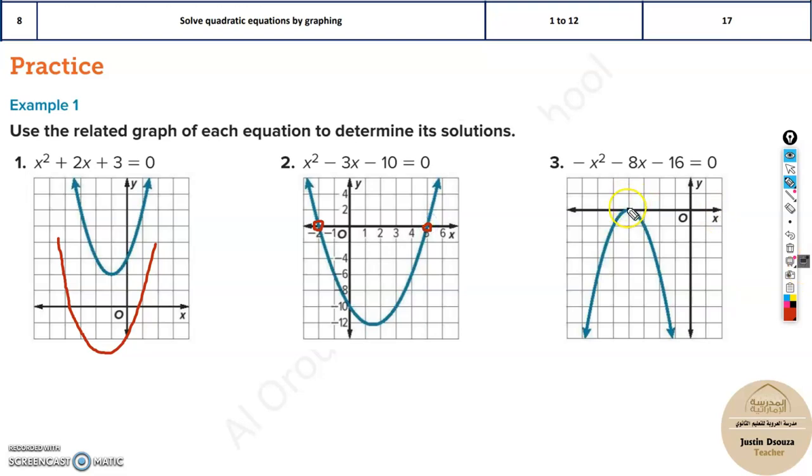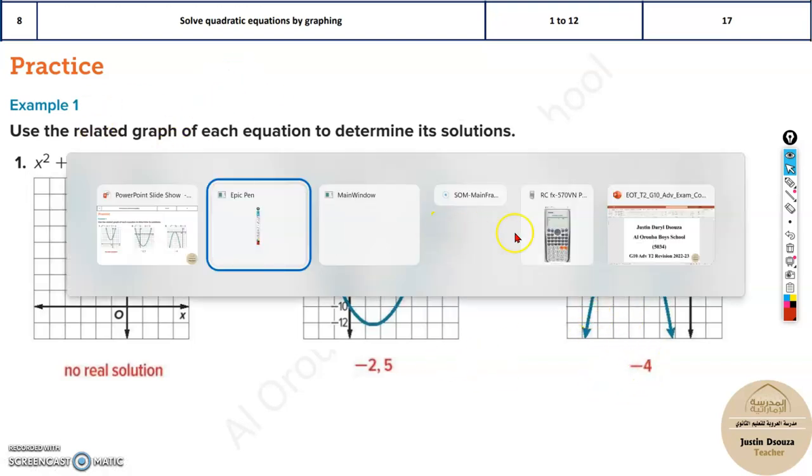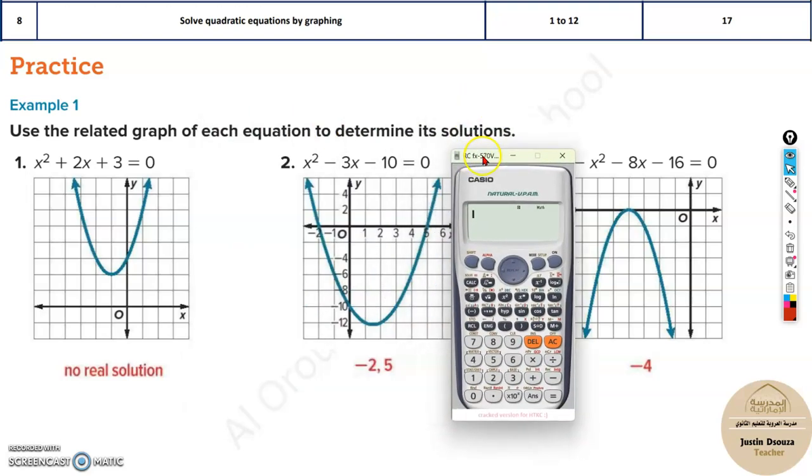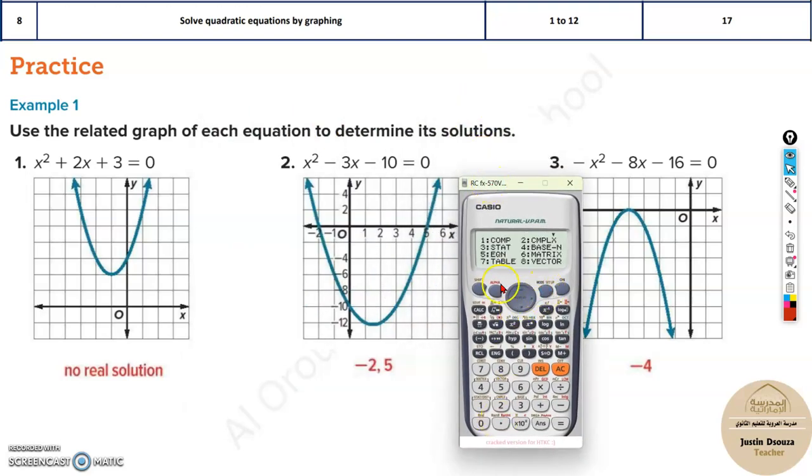See, over here it touches the x-axis—this is a solution, this is a solution. Over here there's only one point, this is the solution. But what about over here? Here you can see there are no real solutions because it does not touch the x-axis. There would be no real solutions, whereas over here it has -2 and 5, and over here it is -4. That's how we find, or otherwise you can use your calculator directly to solve it.